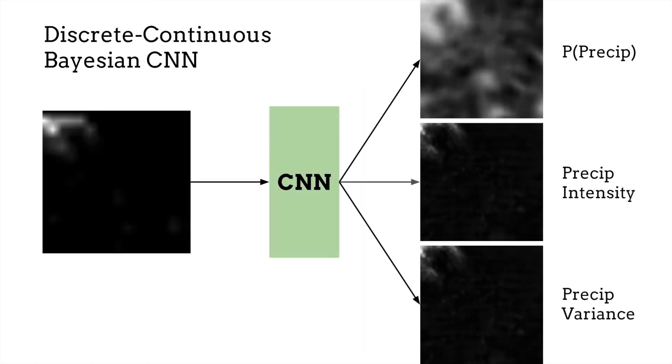In this work, we present a discrete-continuous Bayesian deep neural network which first models the occurrence of an event, and only if necessary, the intensity and associated uncertainty of such an event.